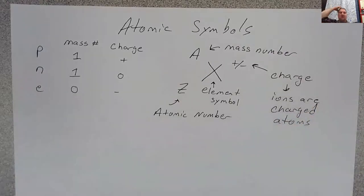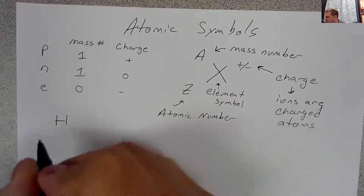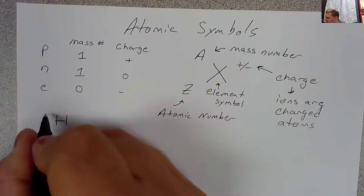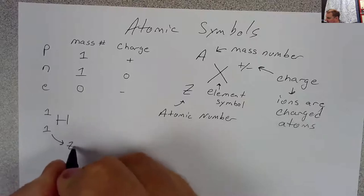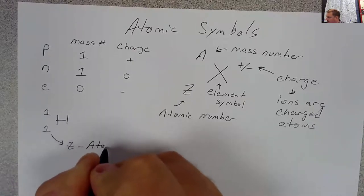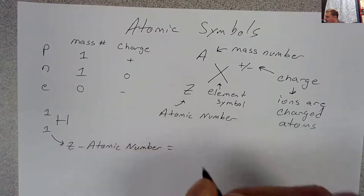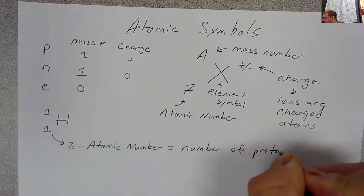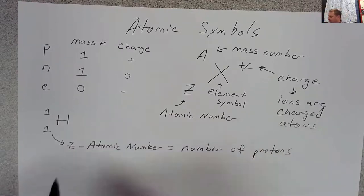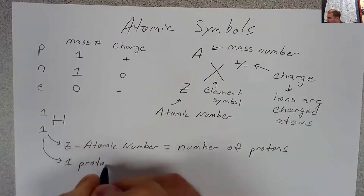If we take an element like hydrogen and we wanted to show the atomic symbol for an atom of hydrogen, we might say that's hydrogen with a one and a one. The atomic number Z is equal to the number of protons. So if the atomic number is one, then that means that there is one proton in hydrogen.